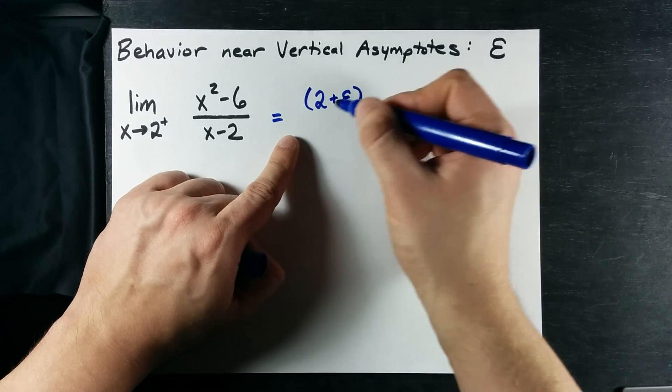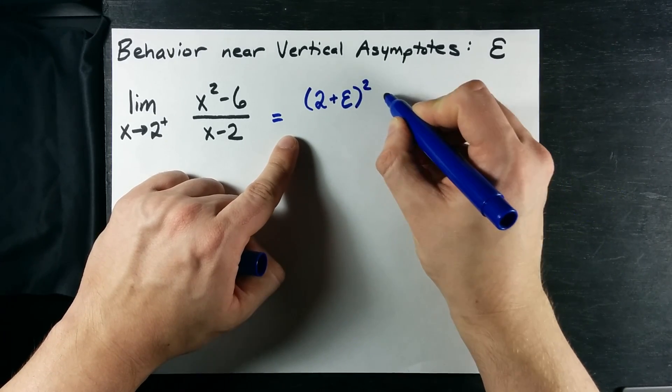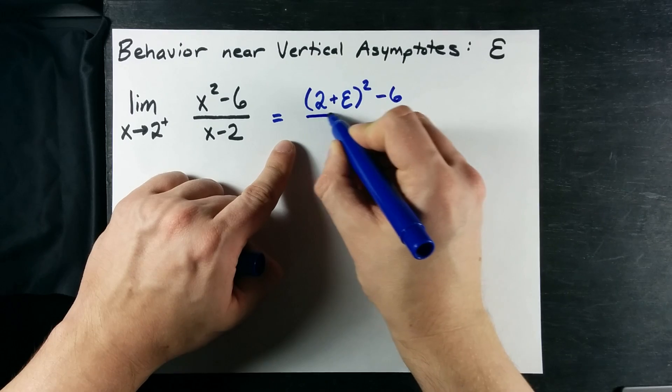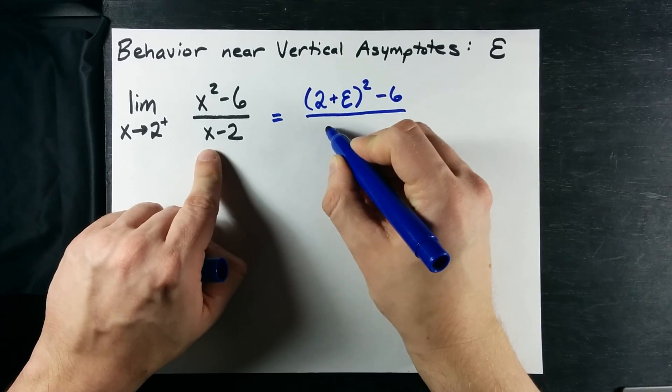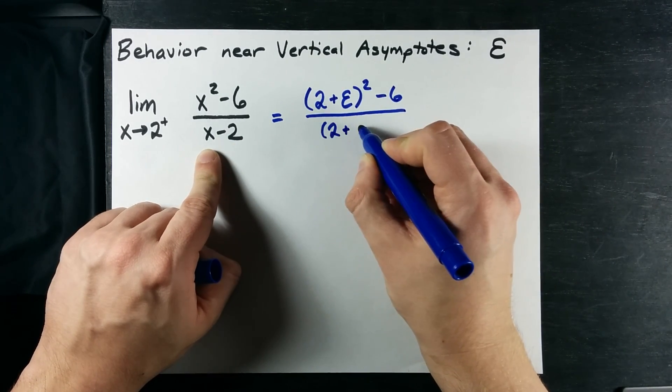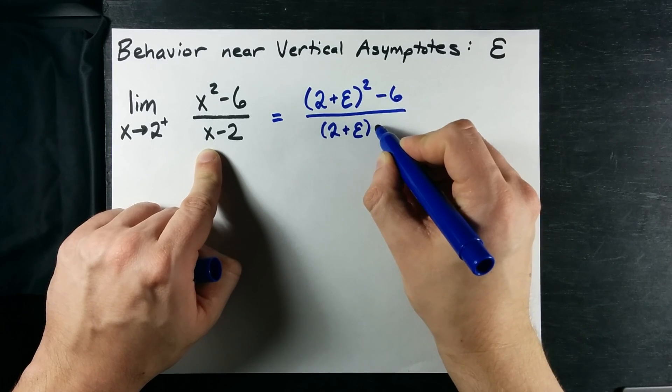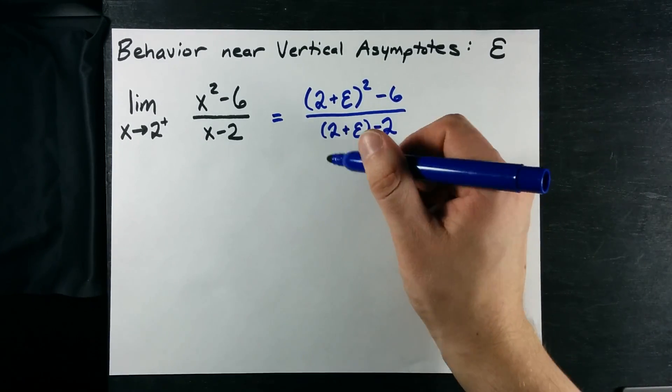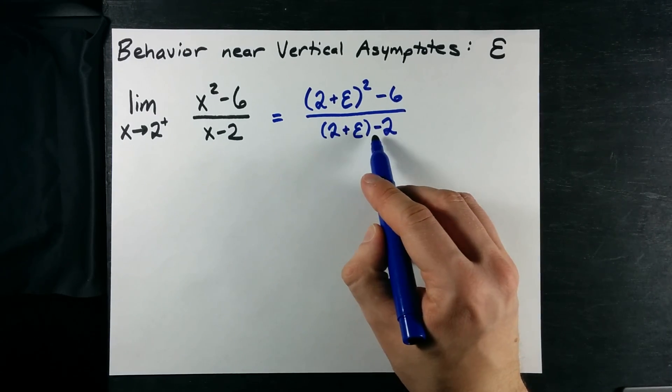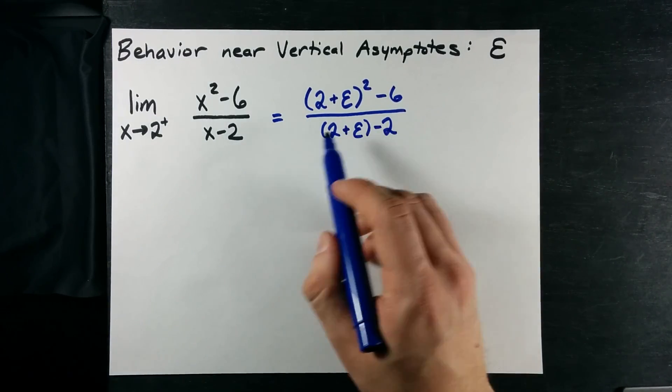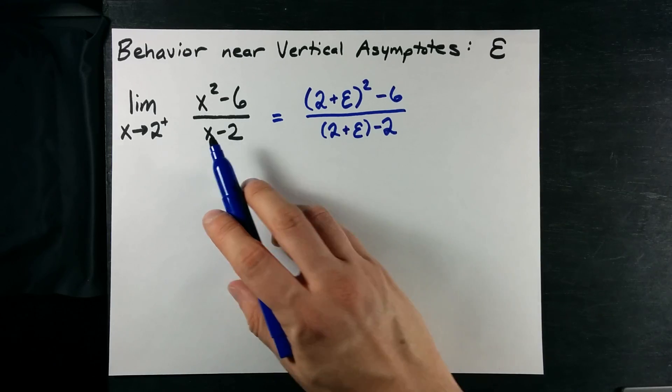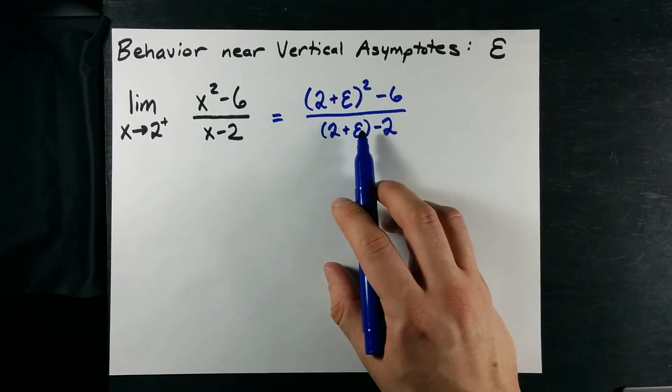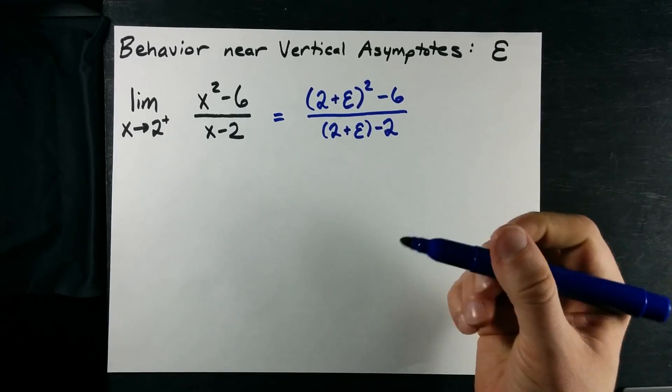2 point, I don't know, 0.0001 squared minus 6. And on the bottom, my x value that I'm plugging in is still 2 plus that infinitesimally small number. It's kind of like a cheat because you can see that the 2 and the minus 2 cancel out to 0. That's why you're not allowed to plug 2 straight up in here. But 2 plus some infinitesimally small number? Yeah, that's okay.